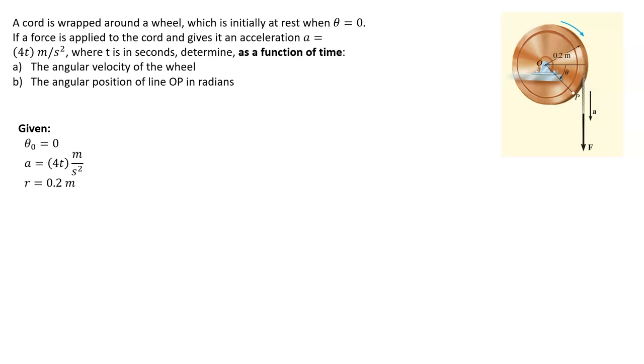And the radius is 0.2 meters. So we have a few of our dynamics equations. This a_p, this is the point that's on the wheel that we're going to use as our marking point.